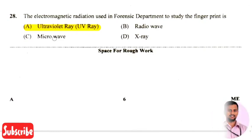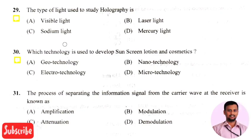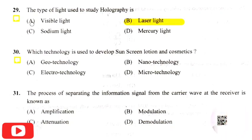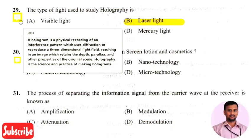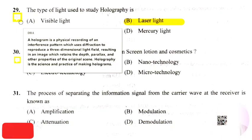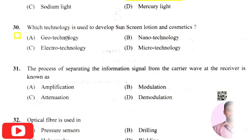The next question is: the type of light used in the study of holography is — the right answer is option two, that is laser light. Holography or hologram in physics is a record of an interference pattern which uses diffraction to reproduce a three-dimensional light field. Laser light is used in holography.